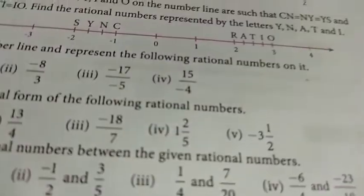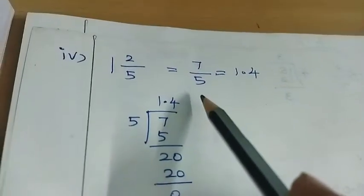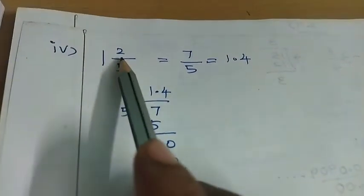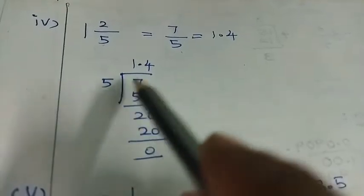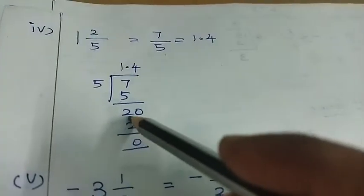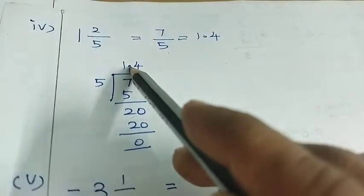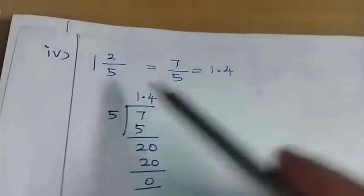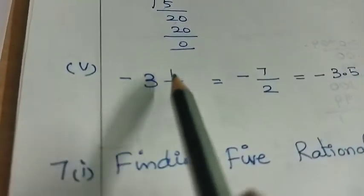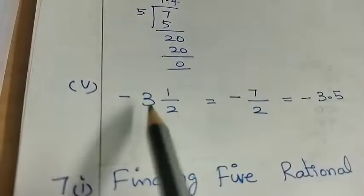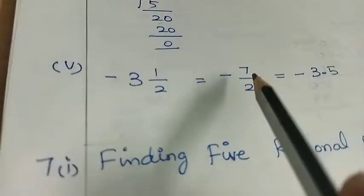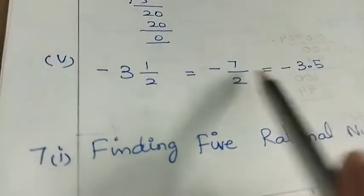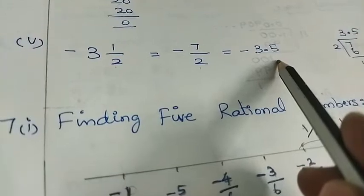Next one: two by five. Change improper fraction to normal. One by five — 5 ones are 5, balance. I have to put a decimal point here. 5 fours are 20. Two by five decimal form is 1.4. Next, fifth sum: minus 3 and 1 by 2, which is minus 7 by 2.